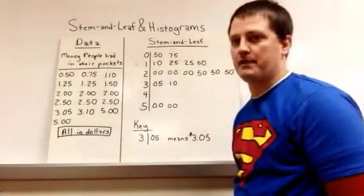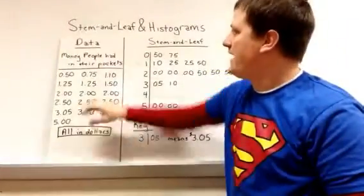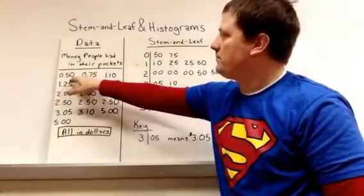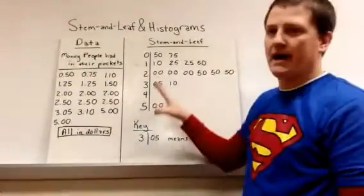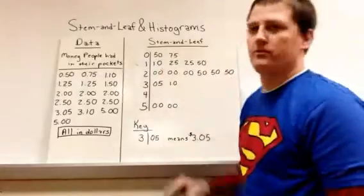First we're going to start with a stem-and-leaf plot. So here we have data, money people had in their pockets, this being 50 cents, 75 cents, and so on. What we've got here is I've put the data into a stem-and-leaf plot.